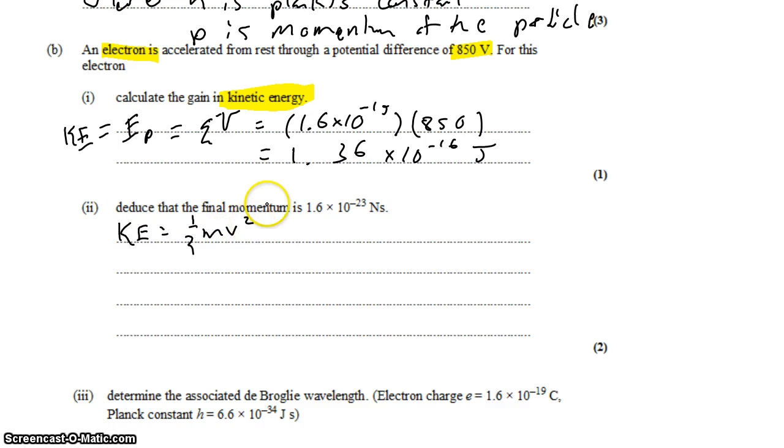We know that kinetic energy is one-half mv squared. You could solve for v here, or we can do something a little bit strange. Multiply and divide simultaneously by m, and that gives us one-half m squared over m, v squared. m squared v squared is momentum squared, so that's one-half p squared over m.